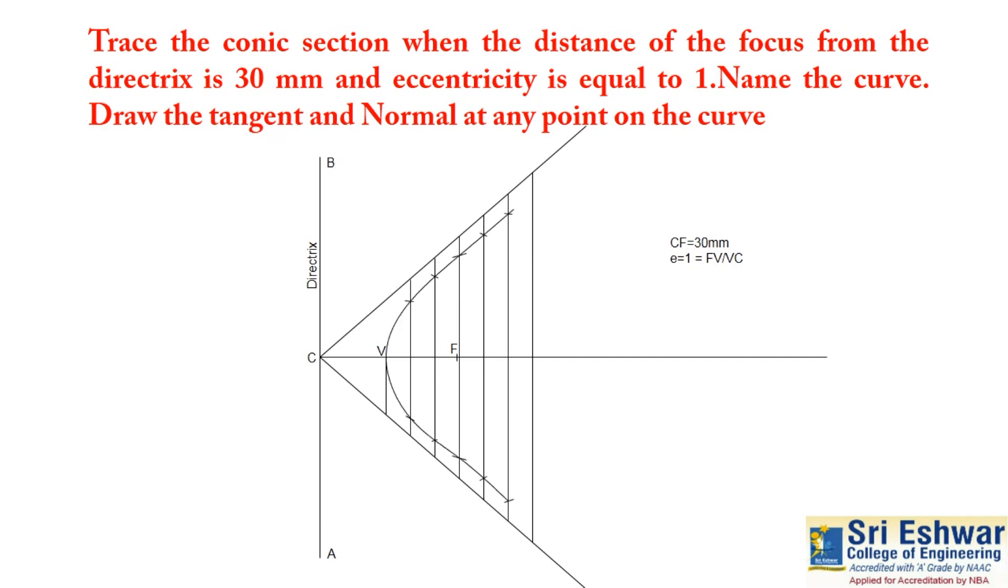Join this all intersection point. You can get one curve. This curve is called a parabolic curve.